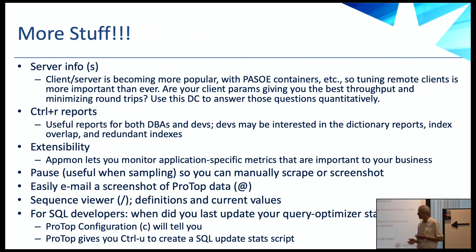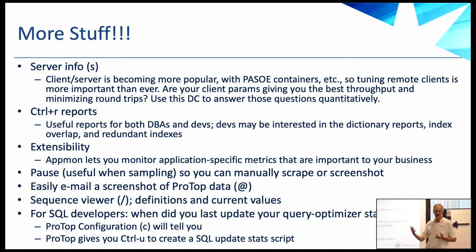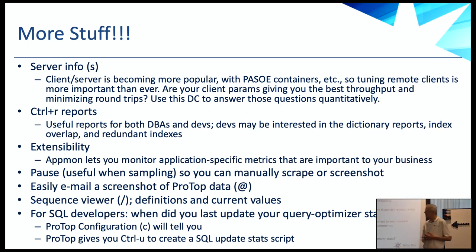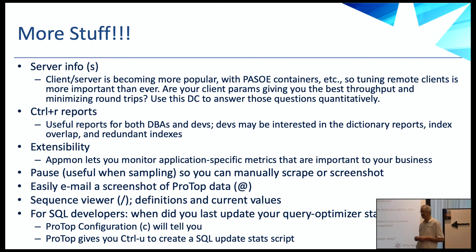There are a few more things we don't have time to cover: reports on server info that help you see the client-server traffic between the database and clients — particularly relevant as more people move away from shared memory. There are also reports within Protop to help you see your parameter configuration and whether all parameters are set correctly. Protop contains a feature called AppMon that lets you add application-specific monitoring — your own application can have KPIs that Protop monitors and trends, with a developer hook for you to use. The pause key freezes the screen so you can take a screenshot, or you can use the at key to send an email to yourself with all that data. There's also a sequence viewer and some SQL features.